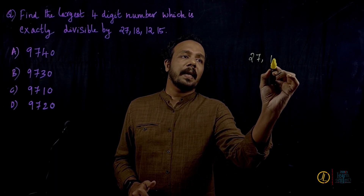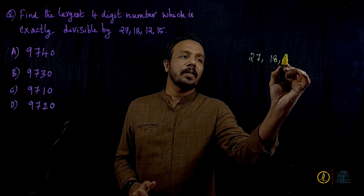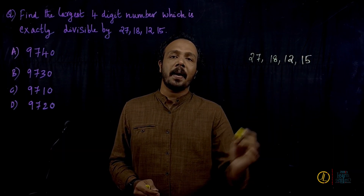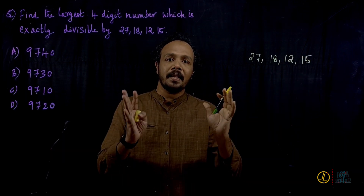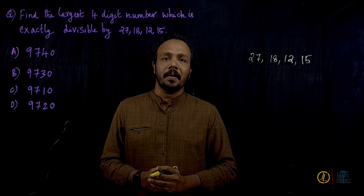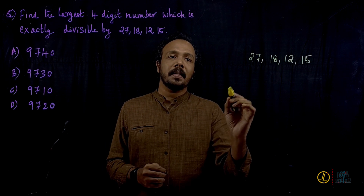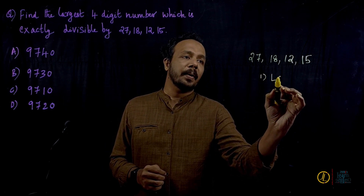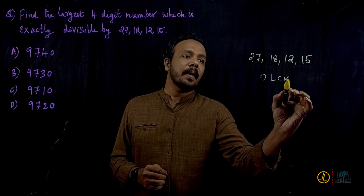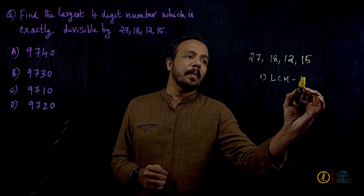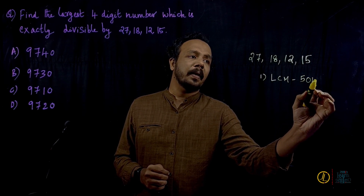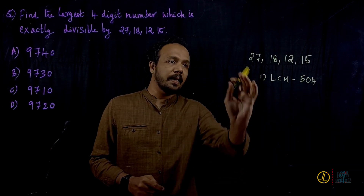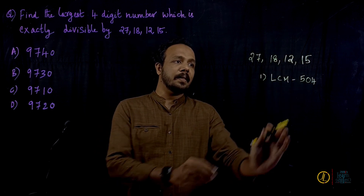The first step is to solve it. We take 27, 18, 12, and 15. The next step is to find the LCM of these 4 numbers. At the time of finding the LCM, we get a number of 540.